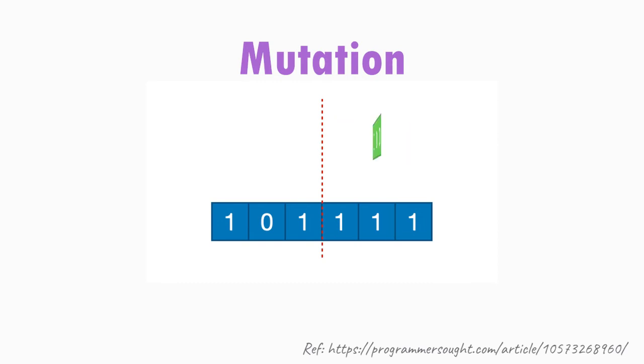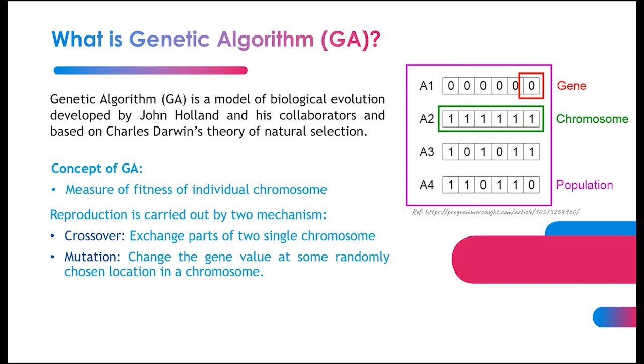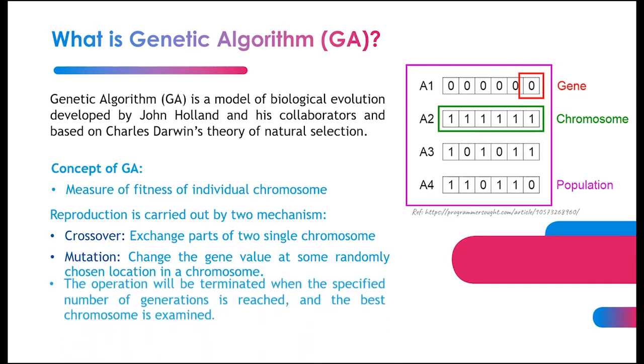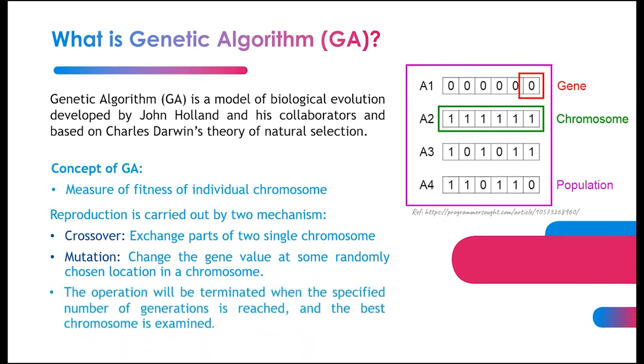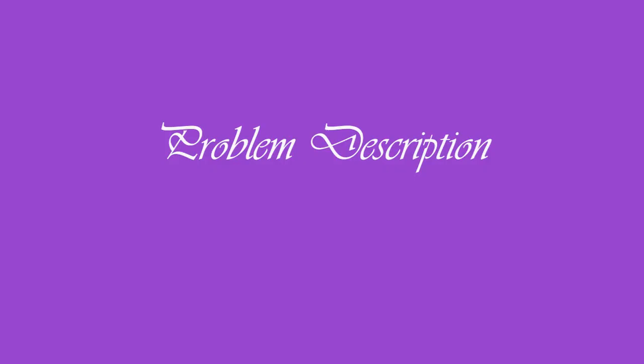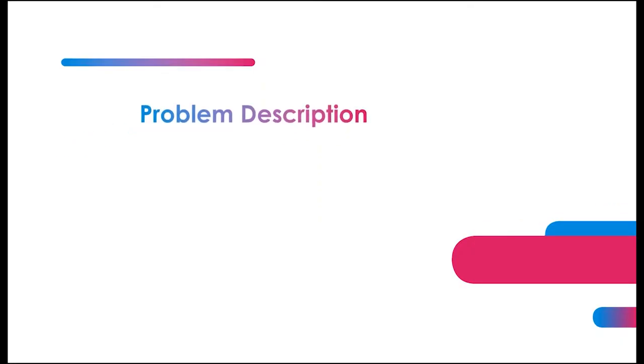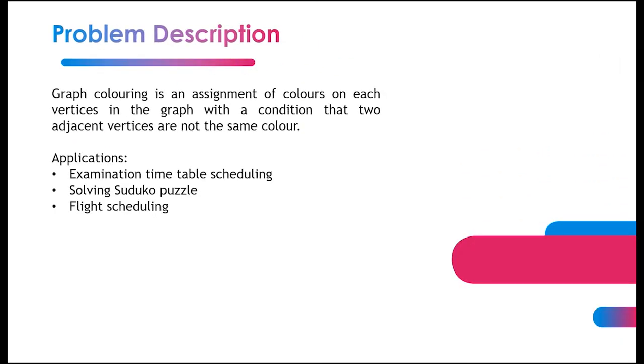Mutation operators change the gene values at randomly chosen locations. The operation will be terminated when the specified number of generations is reached and the best chromosome is examined from the population. Graph coloring is an assignment of colors on each vertices in the graph with a condition that two adjacent vertices are not the same color.